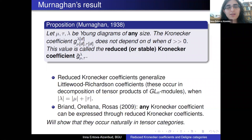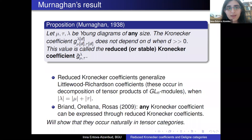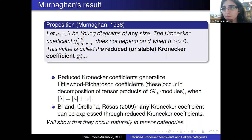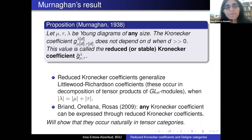Now we have the amazing statement due to Murnaghan from 1938, which tells us that when you consider three Young diagrams of any size and add long enough top rows to all three to create three Young diagrams of the same size D for very large D, the Kronecker coefficient stabilizes. The stable value is called the reduced or stable Kronecker coefficient. This remarkable result was proved using purely combinatorial methods.